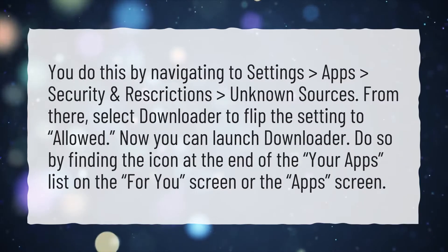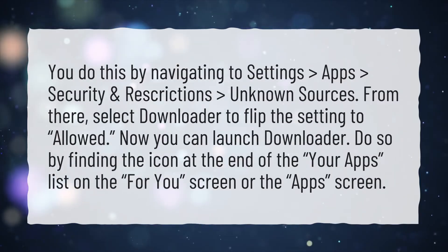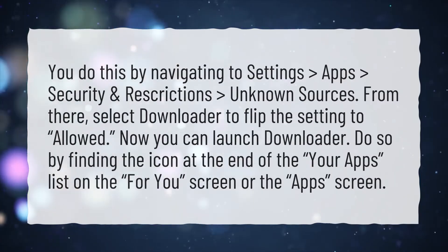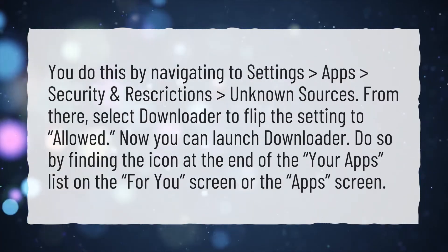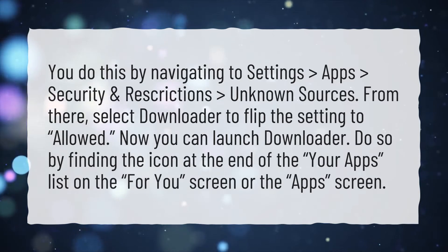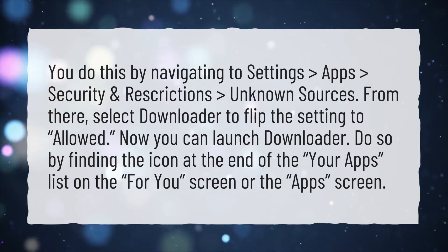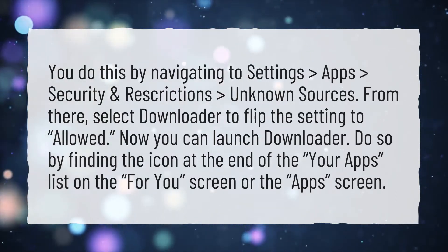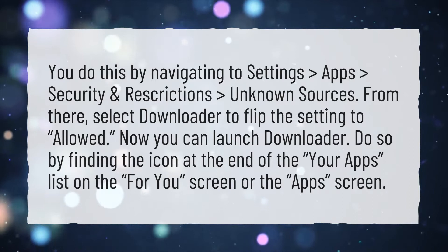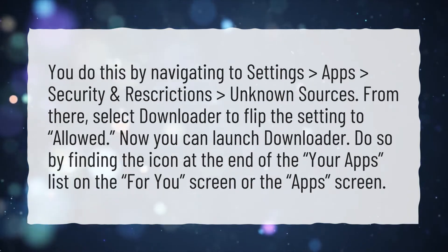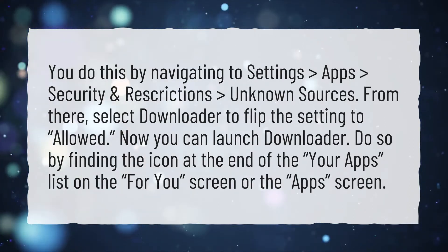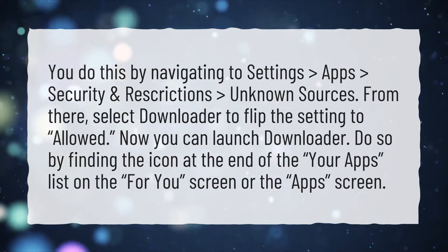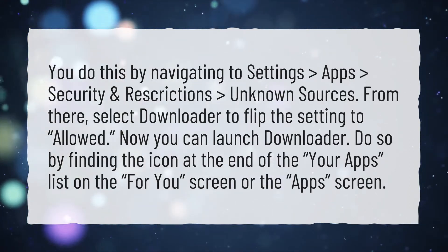You do this by navigating to Settings, Apps, Security and Restrictions, Unknown Sources. From there, select Downloader to flip the setting to Allowed. Now you can launch Downloader.